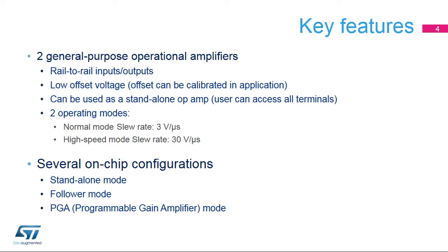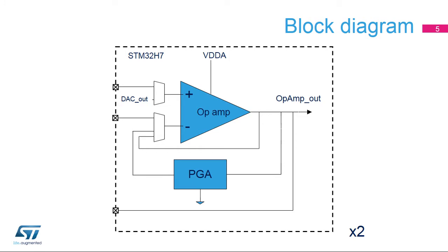The op-amps also provide on-chip functions, including voltage follower mode, while their on-die feedback resistance can be used for the programmable gain amplifier function. This slide shows the block diagram of the operational amplifiers. The STM32H7 integrates two operational amplifiers. Several switches are used to configure different functions. Each op-amp can be configured individually.